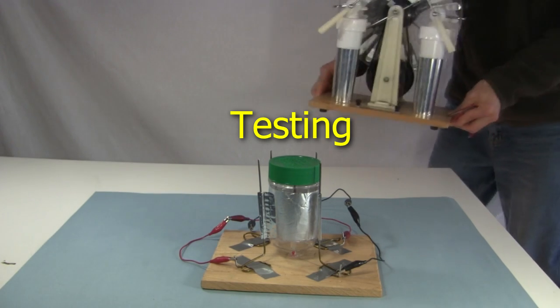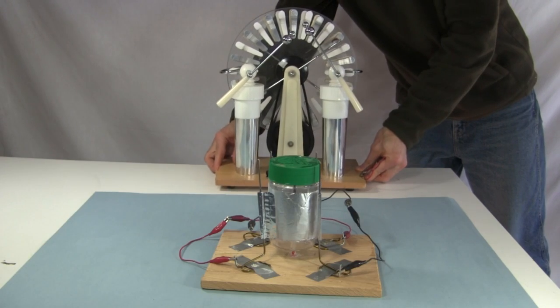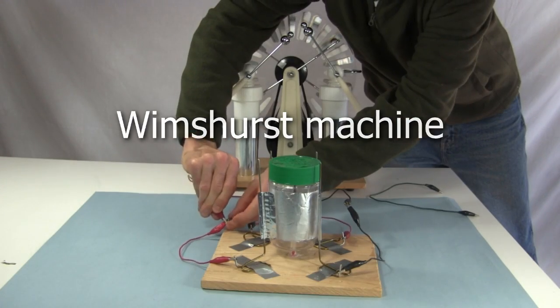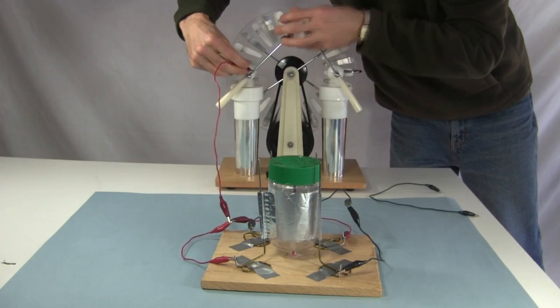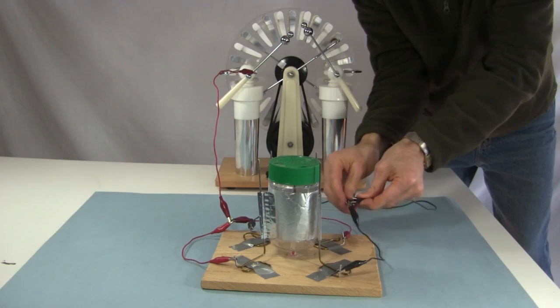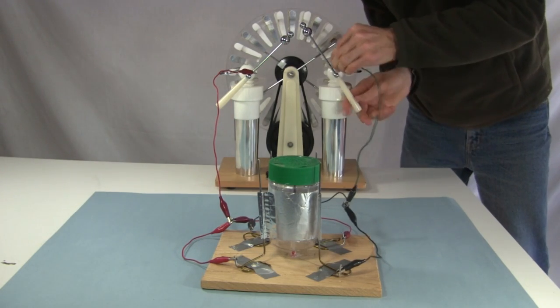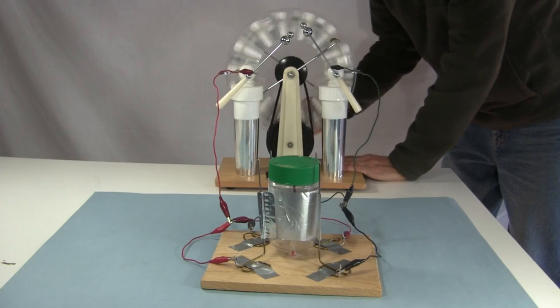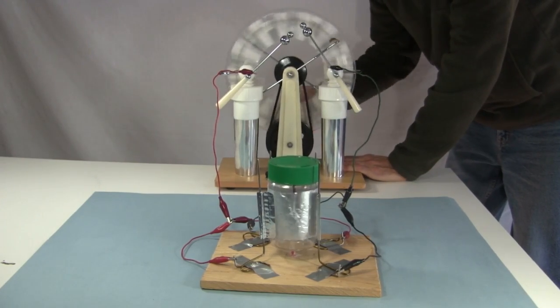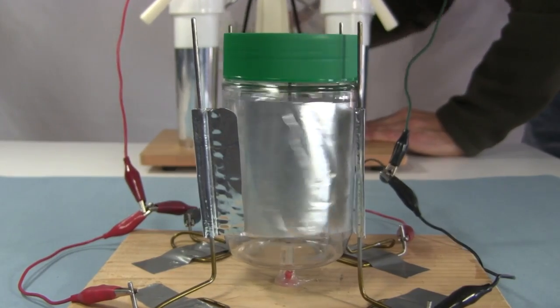And now to test it. To power it you'll need a high voltage source. Here I have a Wimshurst machine. I connect the high voltage side to one side of the Wimshurst spark gap and the ground side to the other side of the Wimshurst spark gap. I start cranking the Wimshurst machine and the corona motor starts up. As you can see it turns quite well.